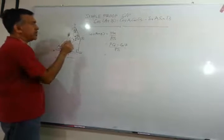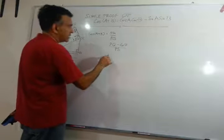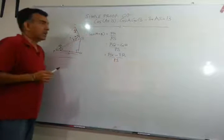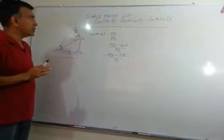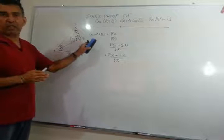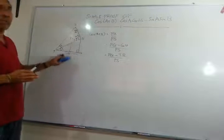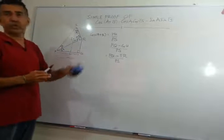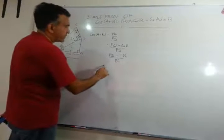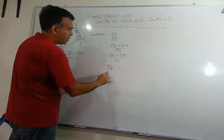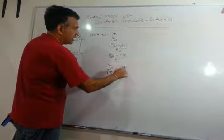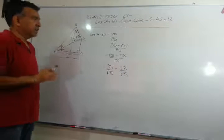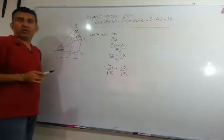So now let's replace this QU here with TR. I haven't done anything unusual, except that I've defined cos(A + B) as your adjacent divided by your hypotenuse, and I've just used TR in place of QU. That's all I've done. So now I can write PQ over PS minus TR over PS. That's basic algebra.